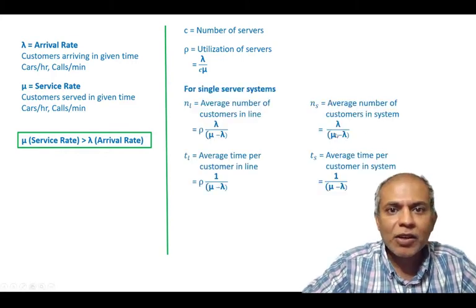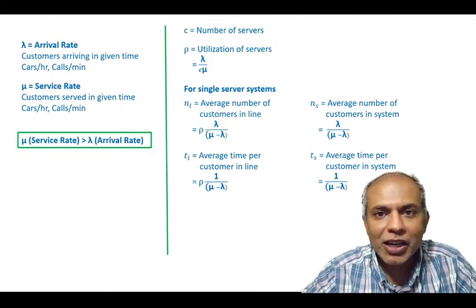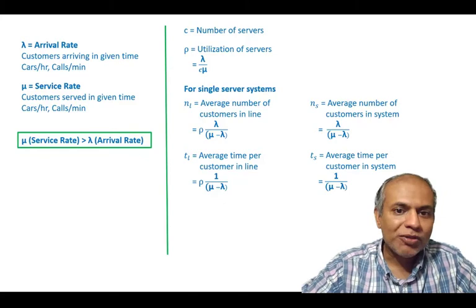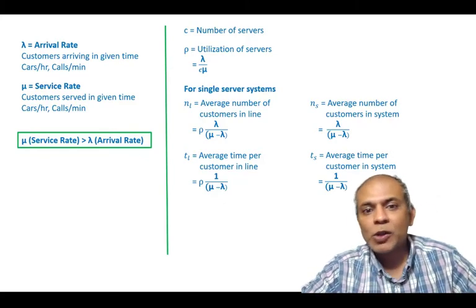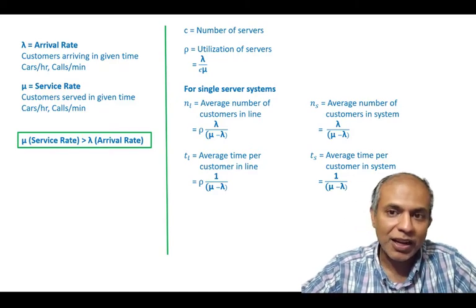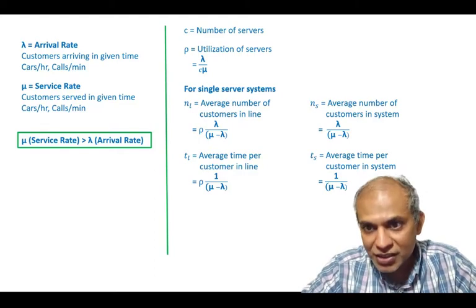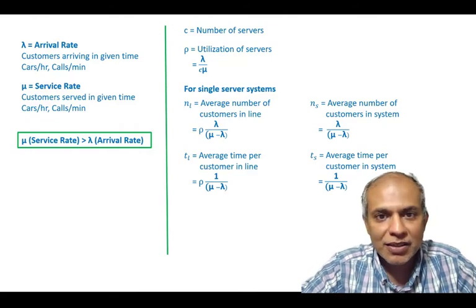And if we assume a single server, the basic system that we're talking about here, we have four calculations. The number of customers in the line which the formula is given here. The average time the customers spend in the line. The average number of customers in the system and the total time that the customers spend in the system.